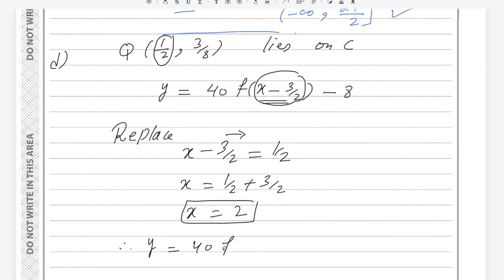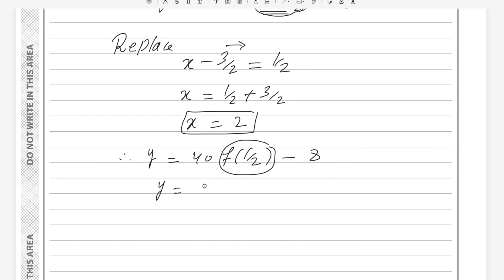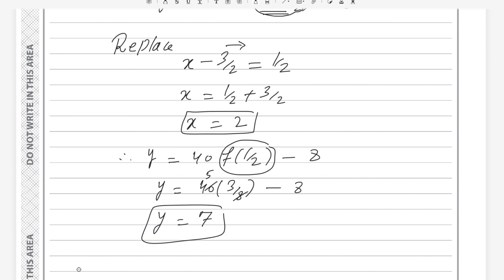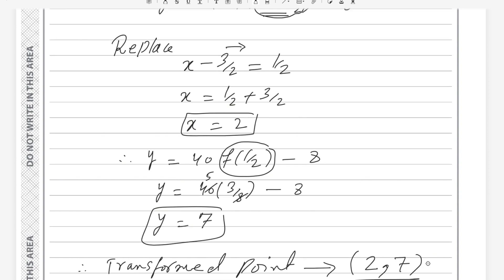For the y-coordinate: since x - 3/2 is replaced by 1/2 and f(1/2) = 3/8, we compute y = 40 × (3/8) - 8. Simplifying: 40 and 8 cancel to give 5, so 5 × 3 = 15, then 15 - 8 = 7. Therefore the transformed point Q maps to (2, 7).